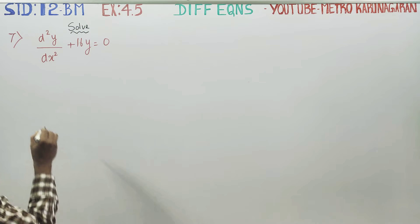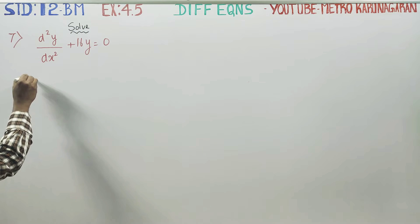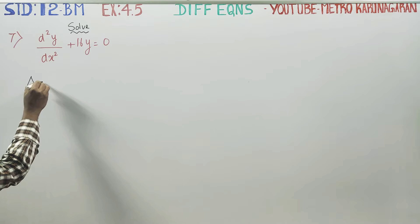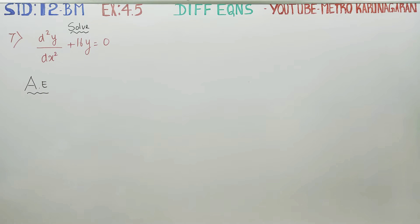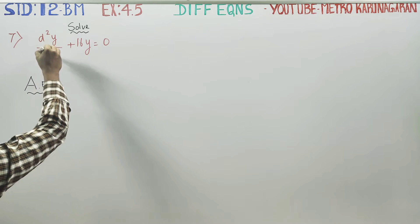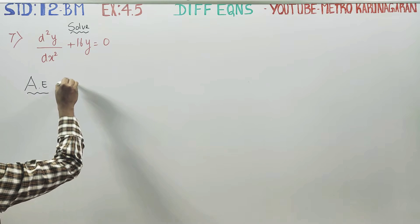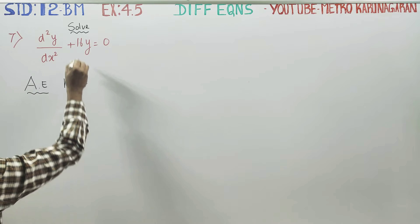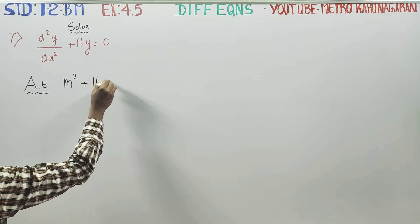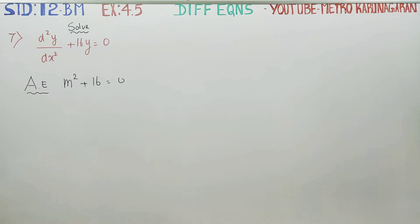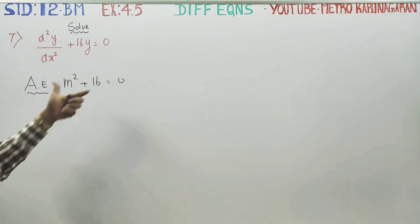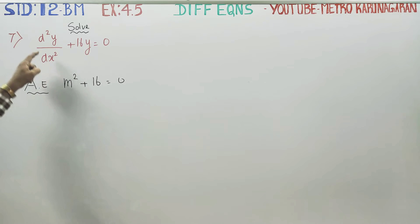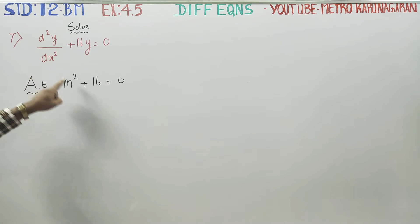Stage 1: write the auxiliary equation. The auxiliary equation — replacing d²/dx² with m² — gives m² + 16 = 0. Here m is equal to d²/dx², so we write the ordinary quadratic equation as m² + 16 = 0.